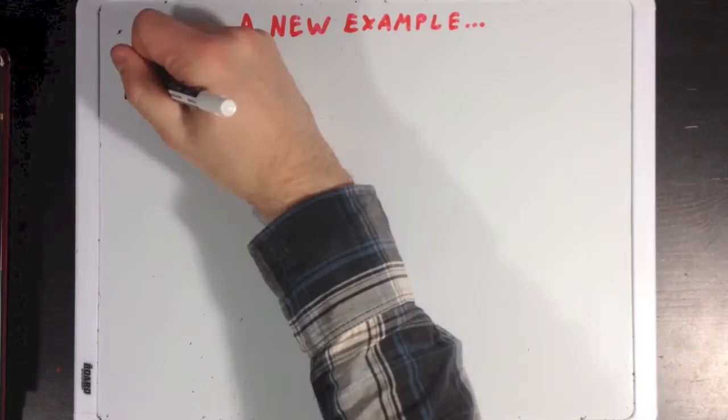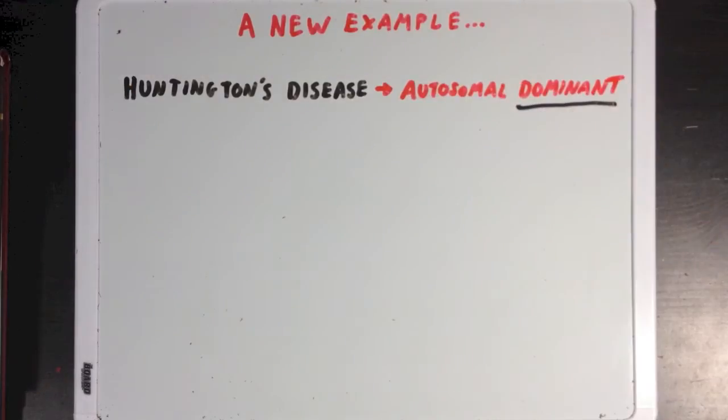Now we just talked about an example with an autosomal recessive disorder. But maybe you're wondering how inbreeding affects autosomal dominant disorders. Well, let's look at Huntington's disease, which is autosomal dominant.